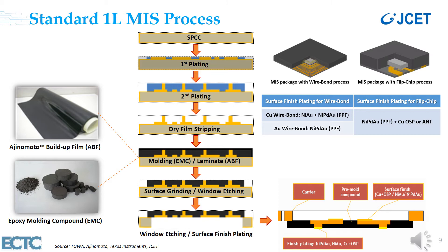The standard fabrication process of a one-layer MIS is illustrated in this slide. The first plating step fabricates the horizontal copper trace and the second the vertical. After that, dry film is stripped and the traces will be either over-molded with EMC or laminated using Ajinomoto buildup film, aka ABF. Window etching and surface grinding process steps are then carried out to expose the copper studs or pads on both sides of the substrate. A surface finish plating method will be chosen depending on the MIS package format. For a wire-bond MIS package with gold wire, nickel palladium gold is needed as the pre-plated finish material, aka PPF. For a flip chip MIS, copper OSP or anti-tarnish material should be added.